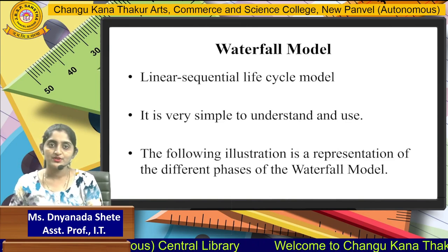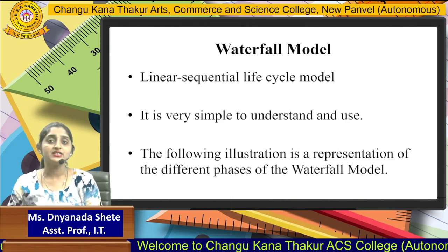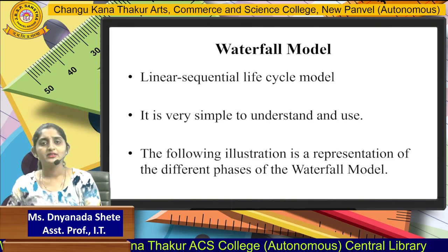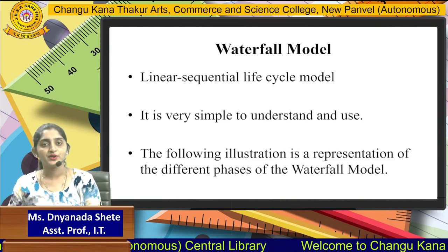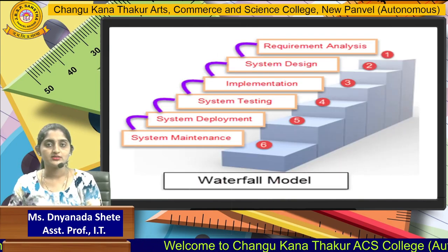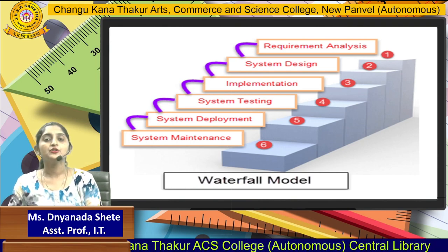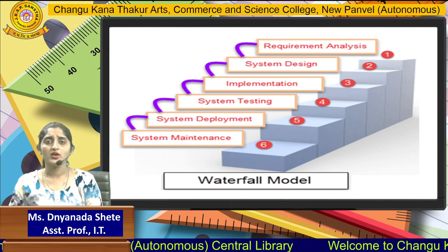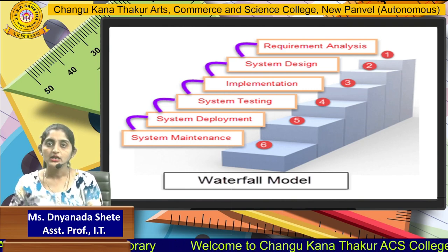As all of you know, waterfall means a linear, sequential flow — not backward, only forward. In the waterfall model there are some illustrations representing the different phases. There are six phases present in the waterfall model: requirement analysis, system designing, implementation, system testing, deployment, and system maintenance.